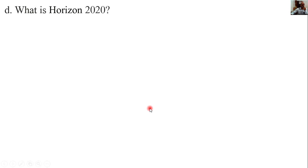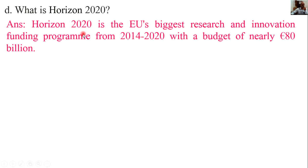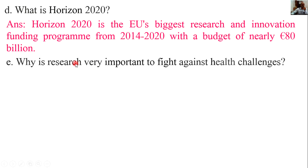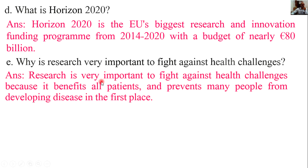What is Horizon 2020? Horizon 2020 is the EU's biggest research and innovation funding program from 2014 to 2020 with a budget of nearly $80 billion. Why is research very important to fight against health challenges? Research is very important because it benefits all patients and prevents many people from developing disease in the first place.